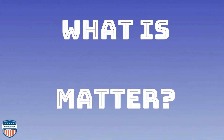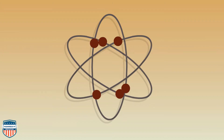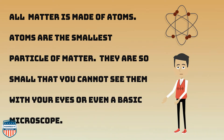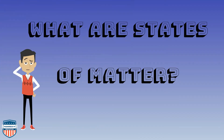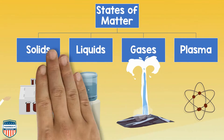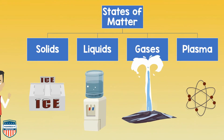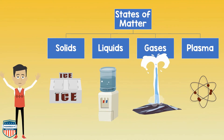What exactly is this matter that we're talking about? What exactly is it made out of? All matter is made out of atoms. Atoms are the smallest particle of matter. They're so small that you cannot see them with your eyes or even a basic microscope. A state of matter is one of the distinct forms that matter can exist. Four states of matter are observable in your everyday life: solid, liquid, gas, and plasma.